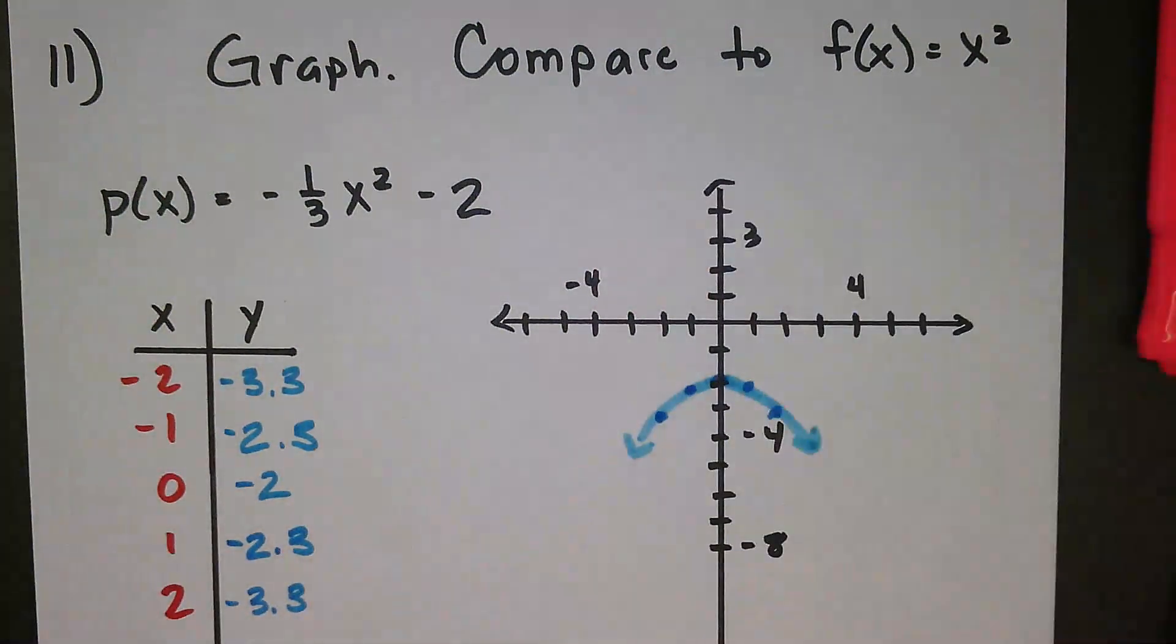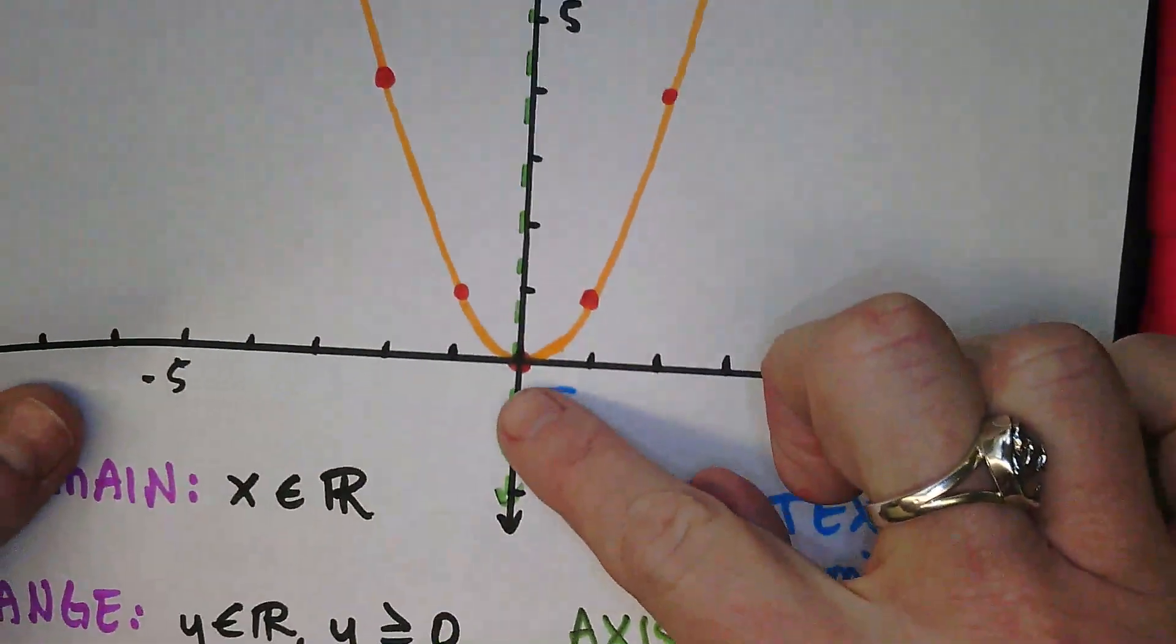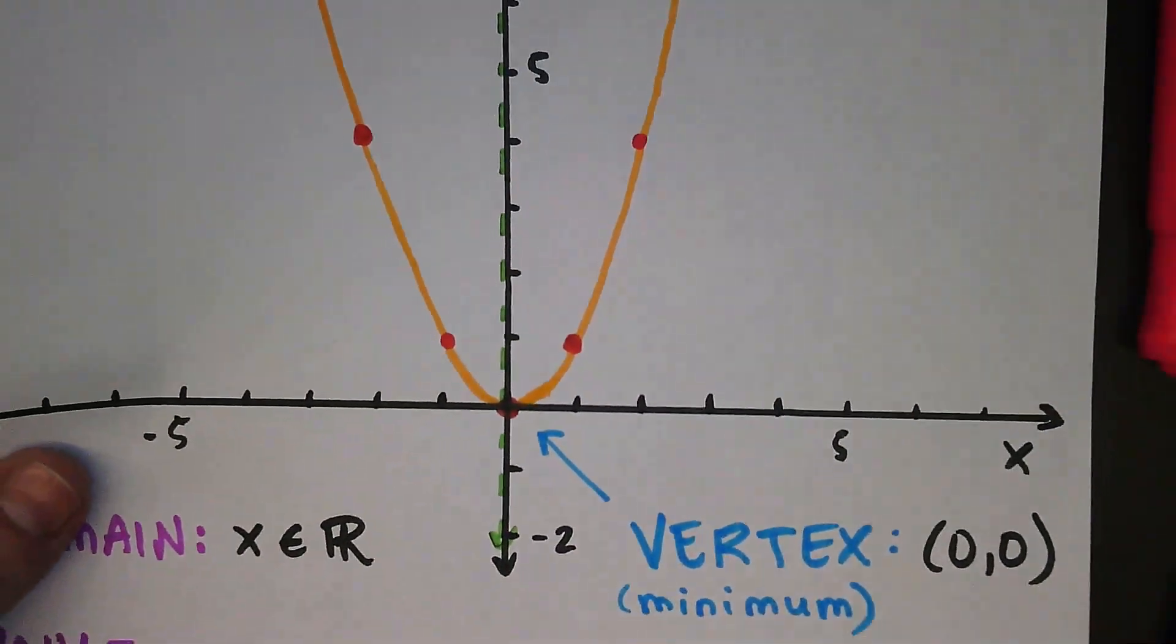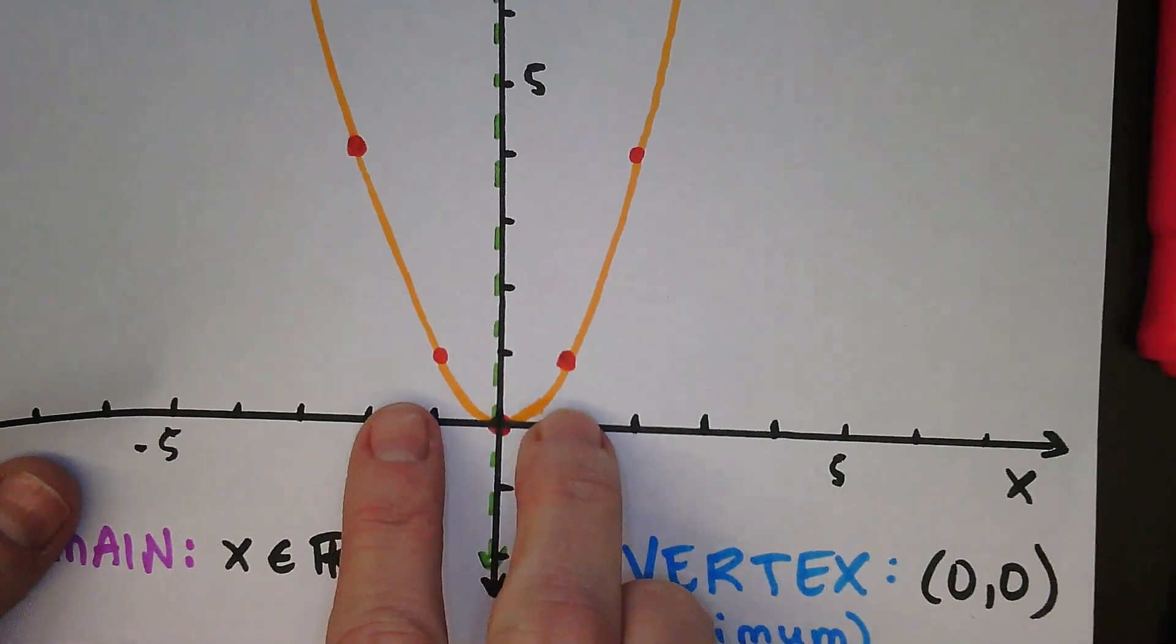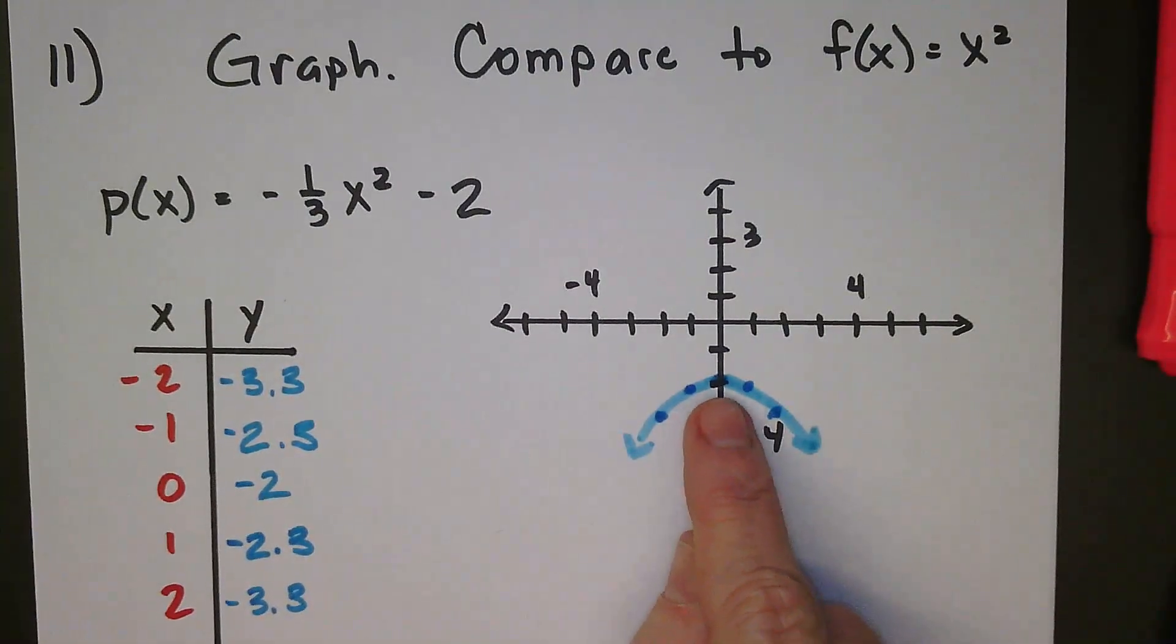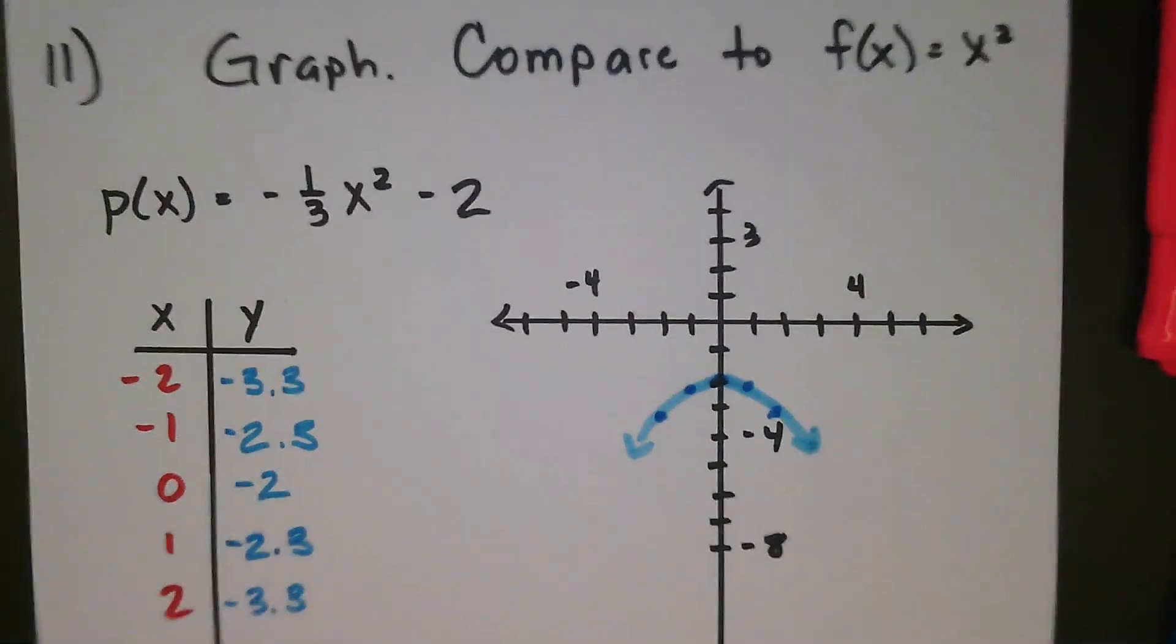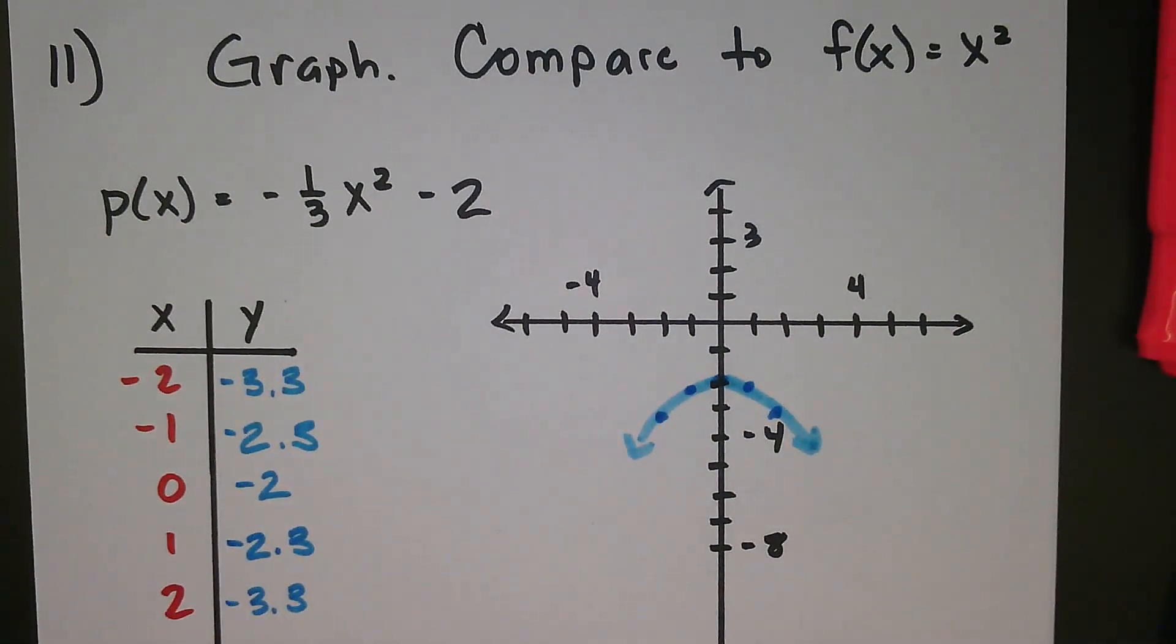Okay, so we're going to compare it to the parent function. Well, clearly a couple things are different. The parent function, the vertex is at the origin and it's oriented up. It's also growing to the left and right one and then up one, and that is not happening here.